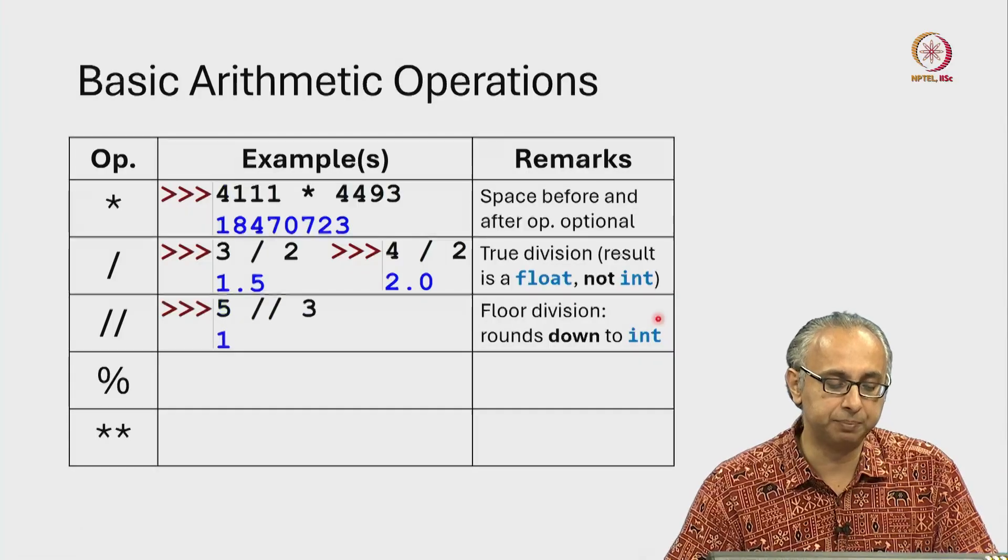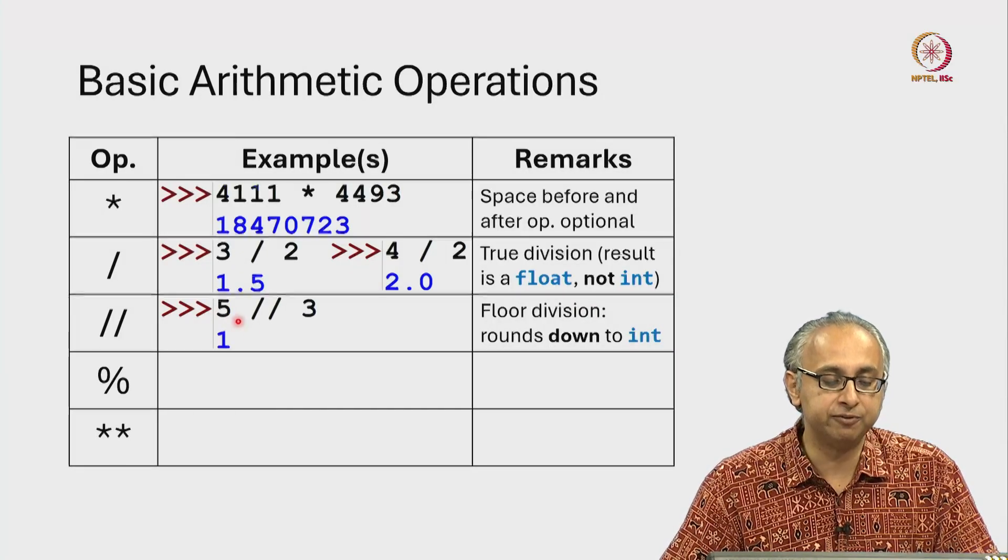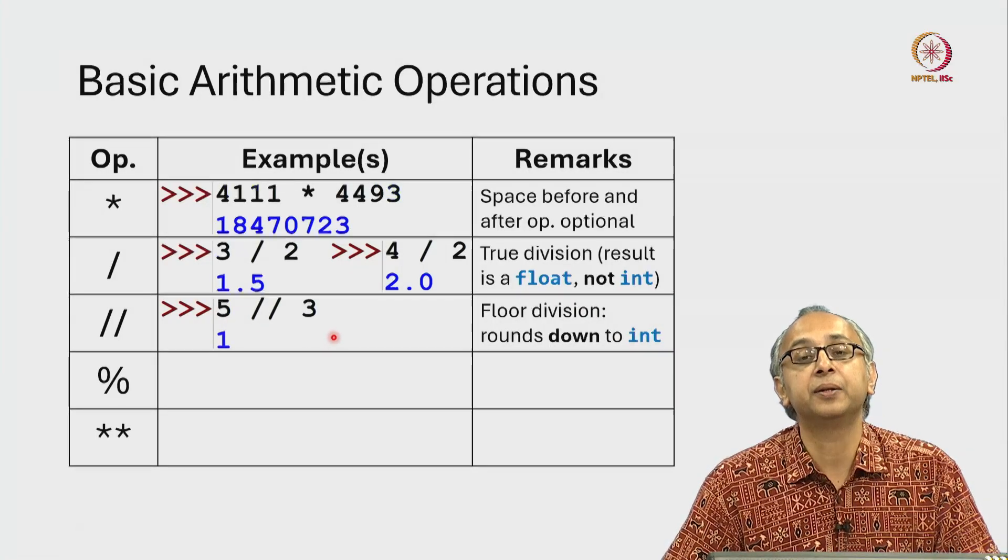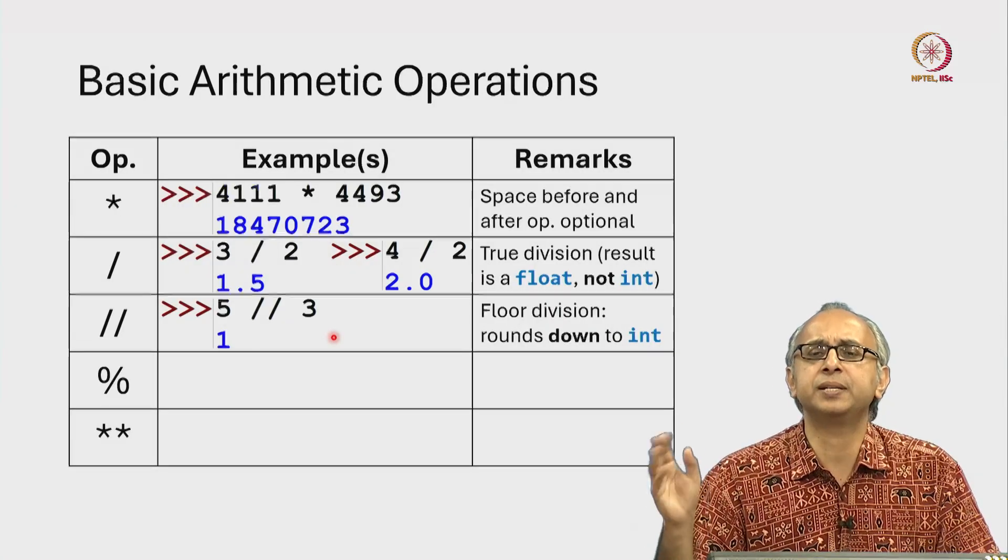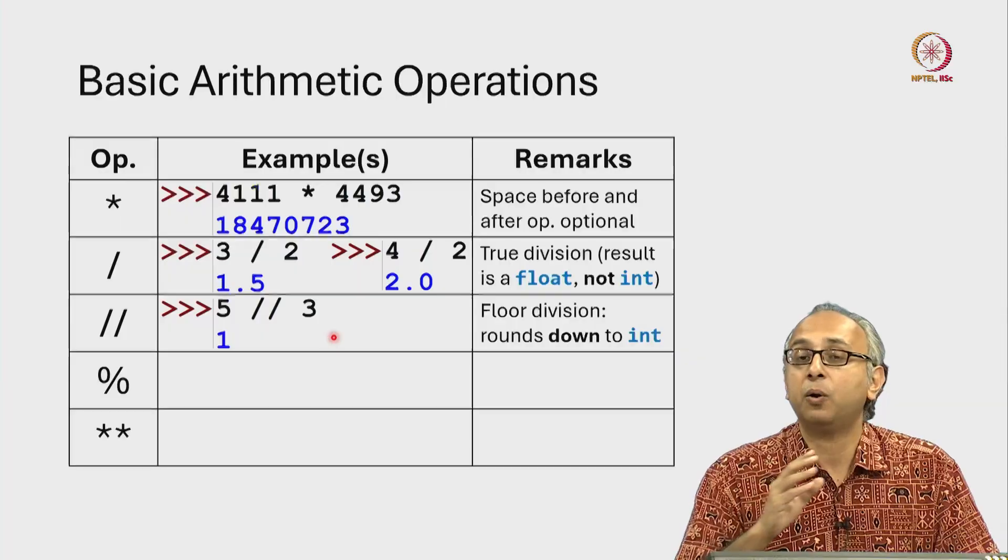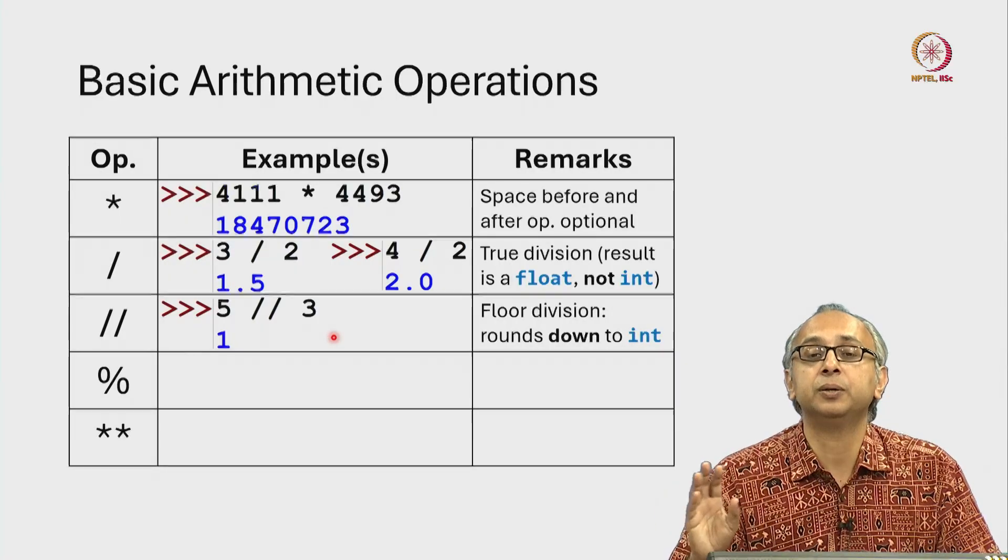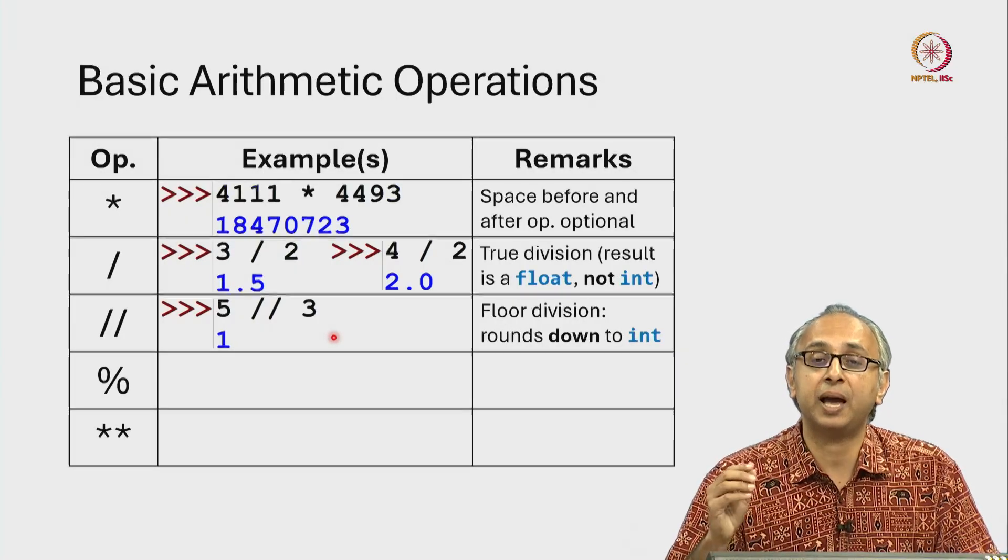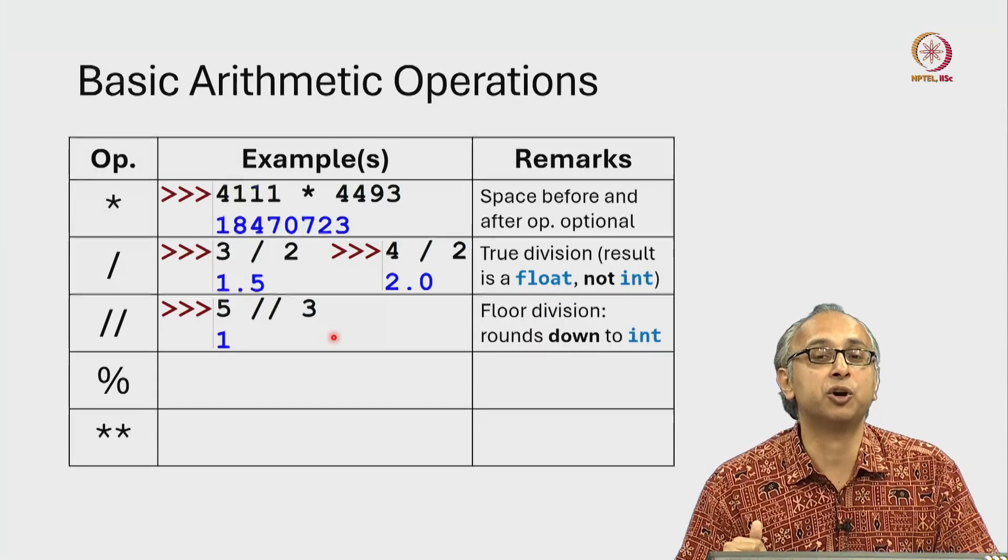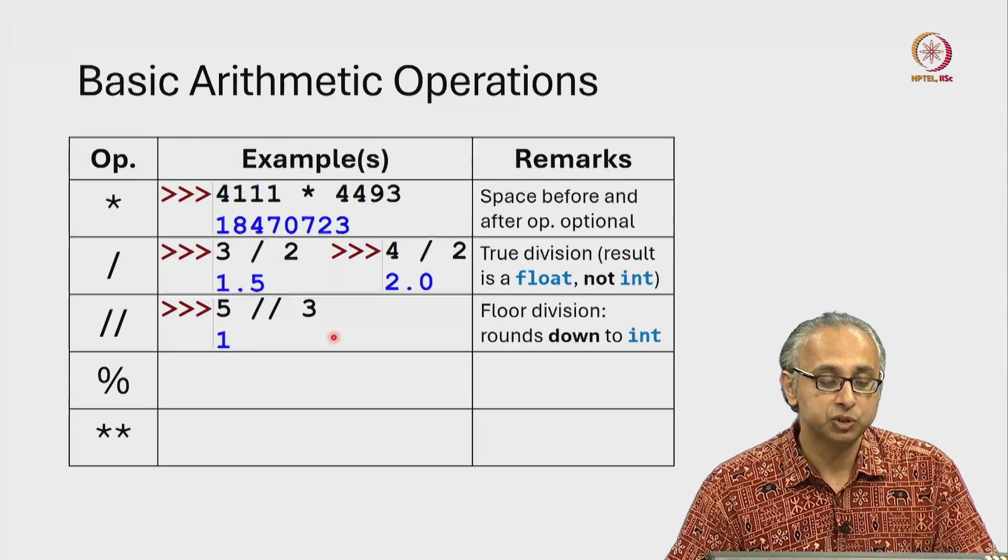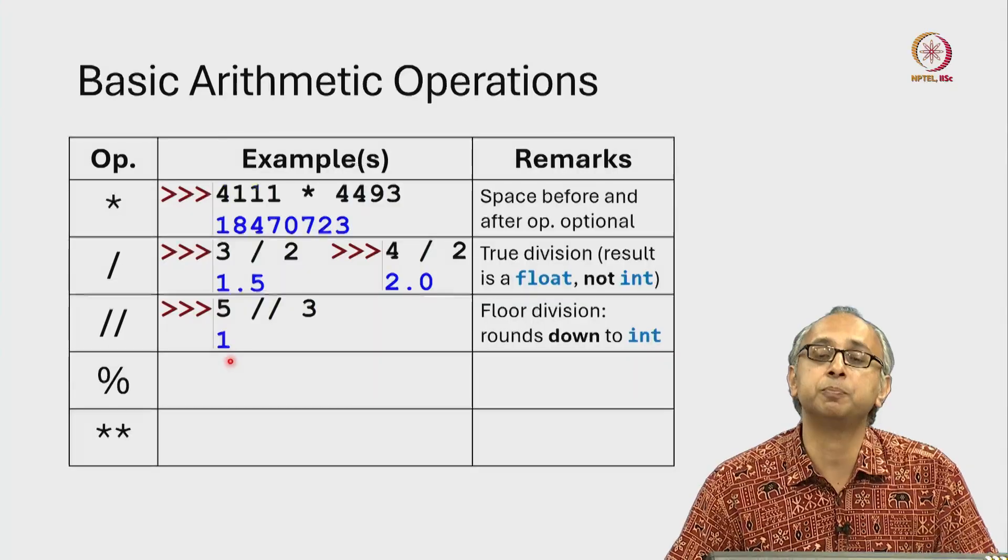So as an example, if I do 5 floor divide by 3, well 5 divided by 3 is of course 1 point something. Now I will get rid of the stuff after the decimal and I will round downwards towards the direction of negative infinity. So 5 divided by 3 will just be 1.